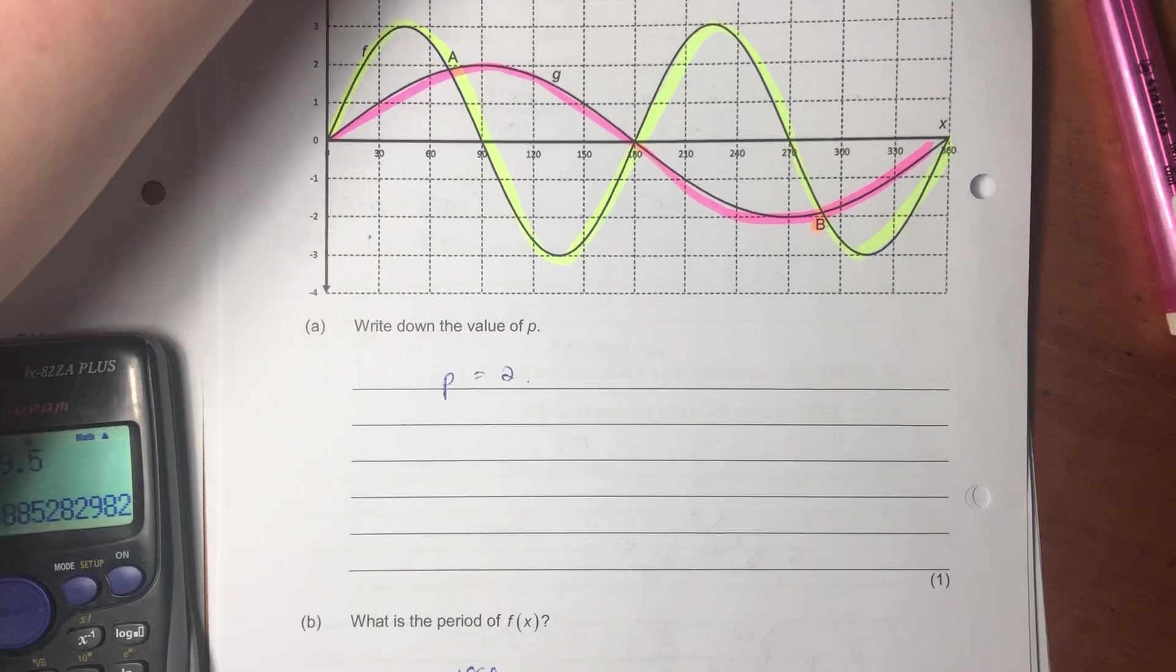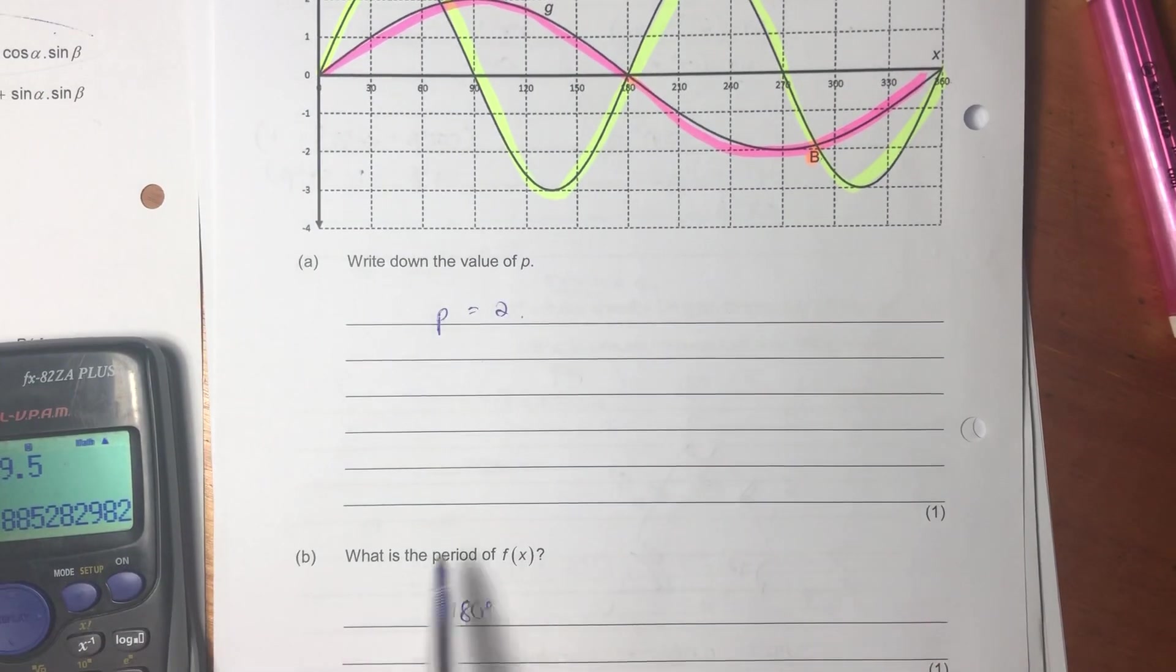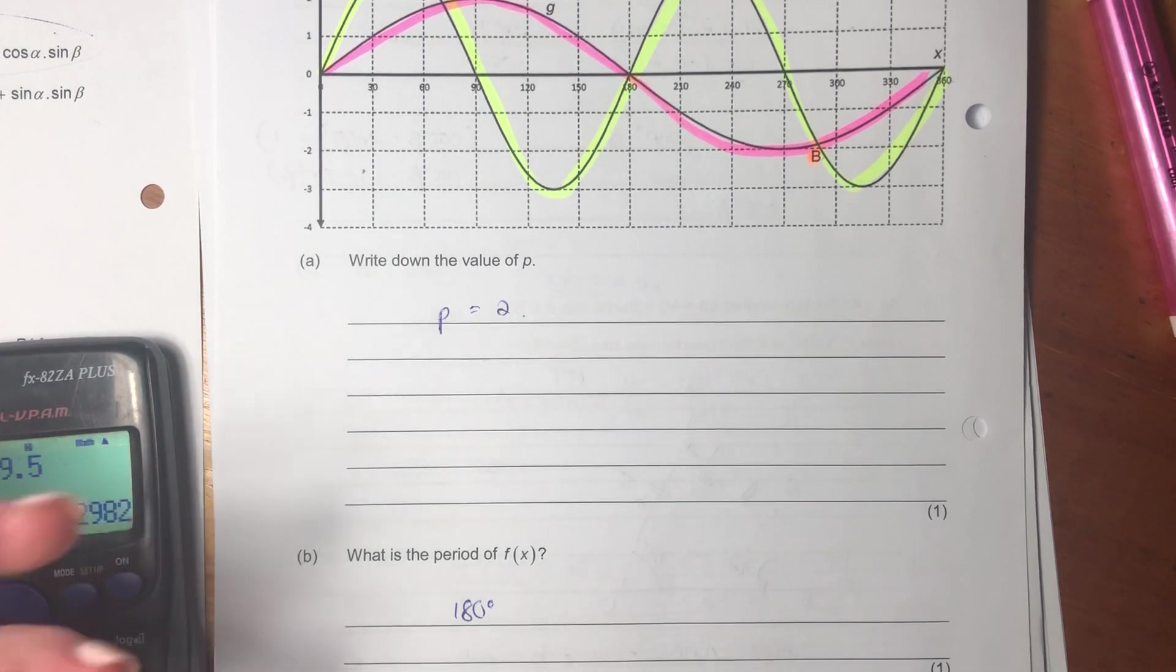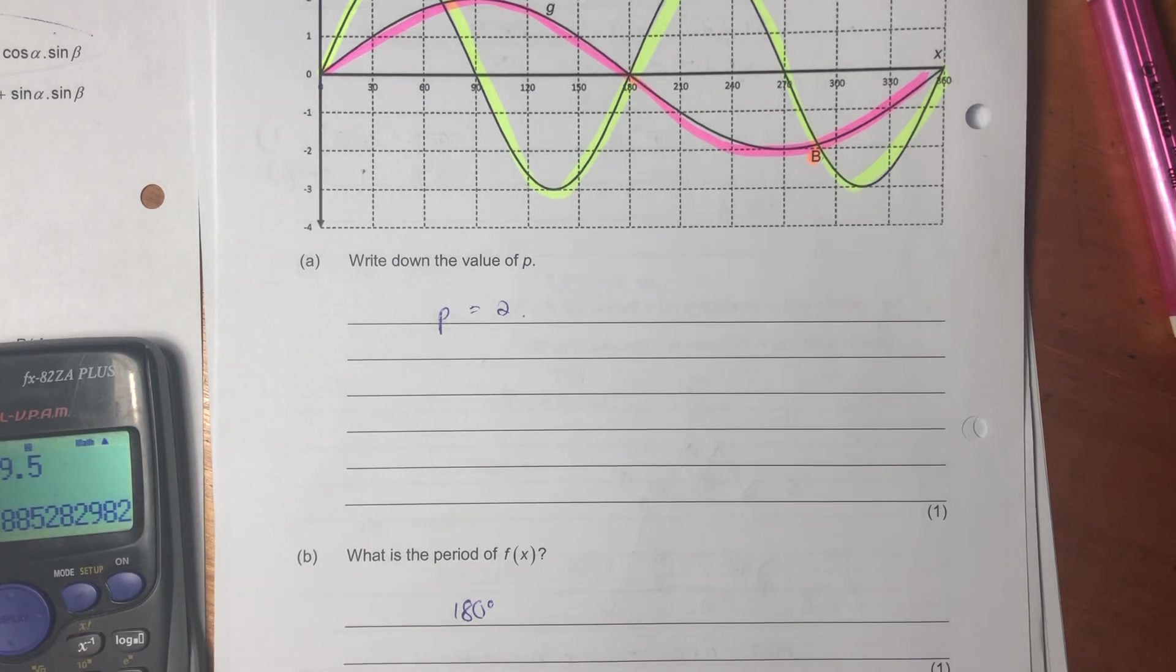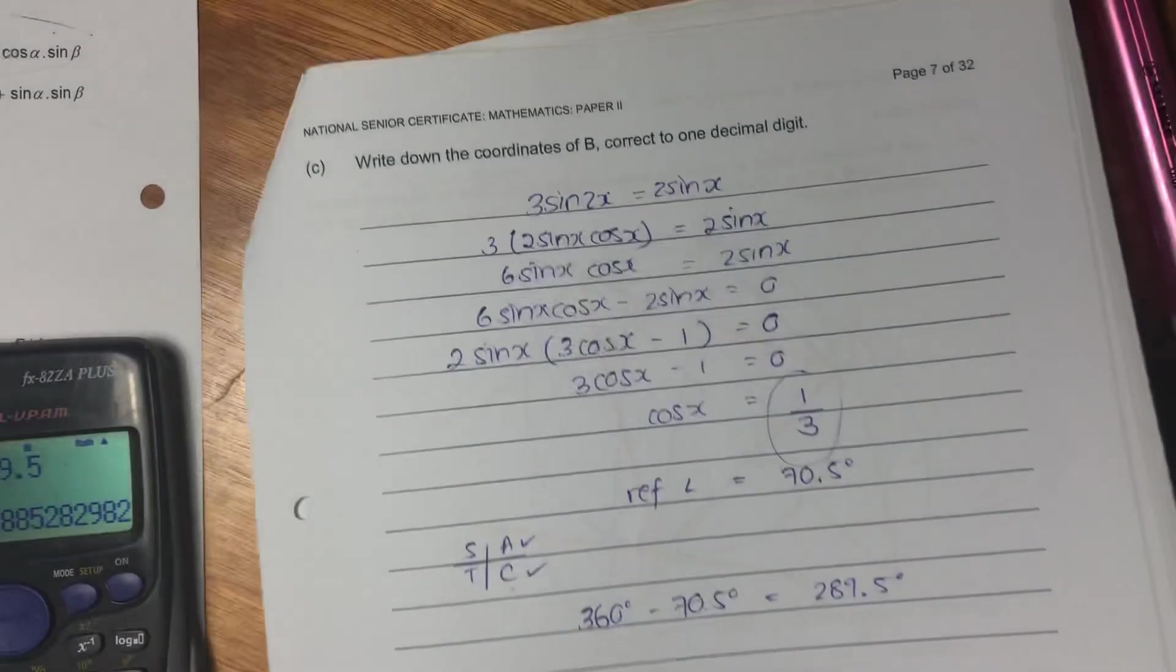Then it says, what is the period of f of x? So it's saying, in how many degrees does it repeat itself once? Well, it repeats itself once in 180. So it's important to understand these things because it's quite basic understanding of these sine graphs, but it also displays key understanding and shows the marker that you know what a period is, you know what the normal period of a sine graph is and how it's been changed for the specific manipulation of a sine graph.